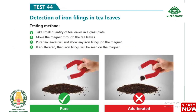Test 44: Detection of iron filings in tea leaves. Take a small quantity of tea leaves in a glass plate. Move a magnet through the tea leaves. Pure tea leaves will not show any iron filings on the magnet. If adulterated, iron filings will be seen on the magnet.